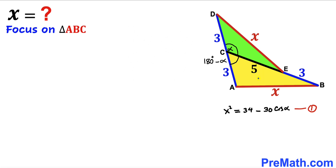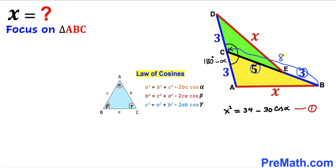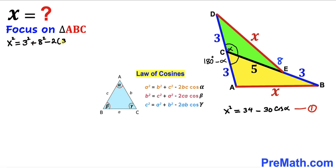Now we are going to focus on the yellow triangle ABC and apply the very same law of cosines. Bear in mind that this side is x and the opposite angle is 180 degrees minus alpha. The whole side length BC is 3 + 5 = 8 units, and the other side is 3 units. Applying the law of cosines: x² = 3² + 8² − 2·3·8·cos(180° − alpha).